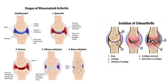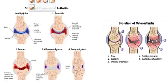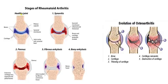Now let's cover the pathophysiology and stages of rheumatoid arthritis. A healthy joint consists of bone, cartilage, a fibrous capsule, synovial membrane, and a joint cavity filled with synovial fluid.